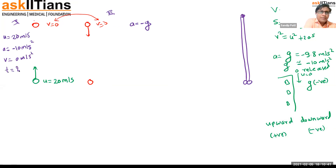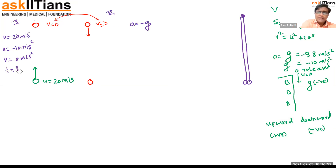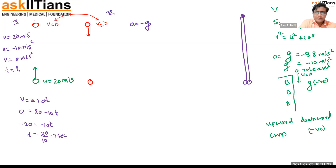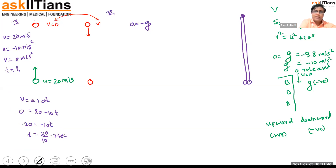Using v = u + at for Part 1: substituting v = 0, u = 20, a = −10, we get t = 2 seconds to reach the highest point. By symmetry, it also takes 2 seconds to come back down.